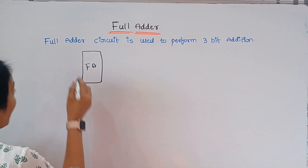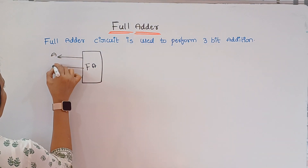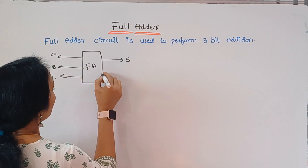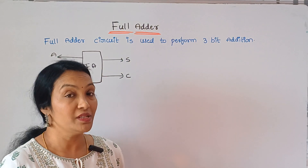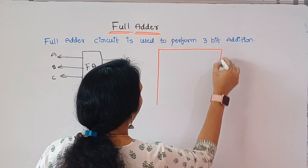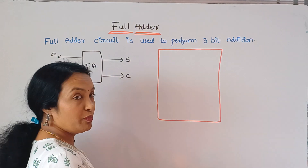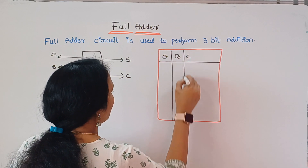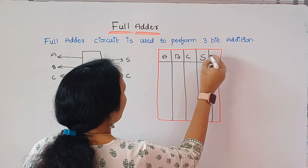How many inputs are here? We have 3 inputs: A, B, and C. We have to draw the outputs. One output is sum and another output is carry.